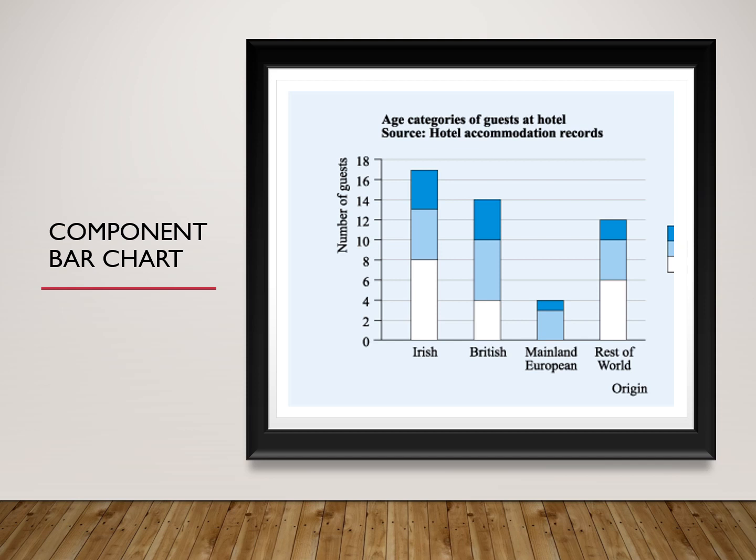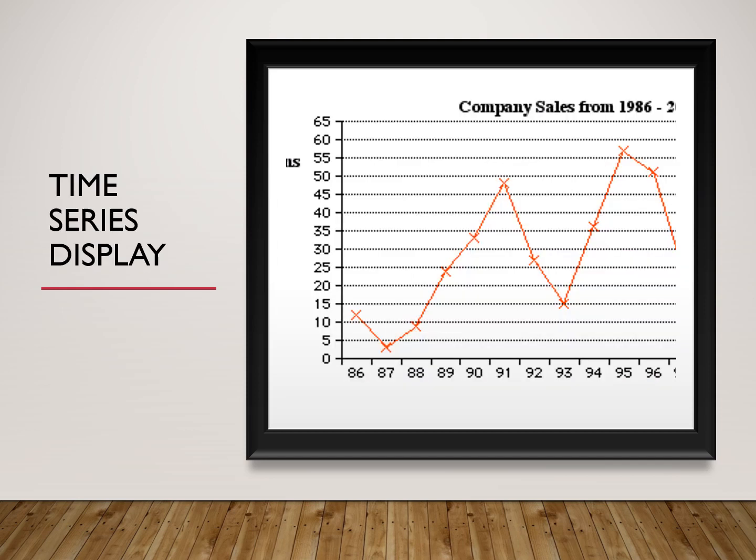This is a component bar chart — a single bar has been cut with different colors. This shows age categories of guests at a hotel from accommodation records. The white portion is more, representing the largest component; light blue is small; and the bluish color is less compared to the other two. It is very simple to understand the components. The component bar chart is also important. When time is important, we use a line chart — that is for time series data.